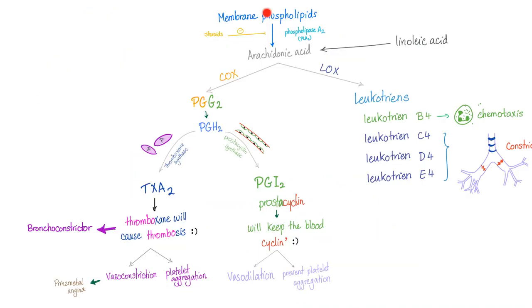Quick review of the arachidonic acid pathway. We start with membrane phospholipid. Now we have the arachidonic acid. By the cyclooxygenase, we have the prostaglandins. If you are in the platelets, that's thromboxane A2. If you are in the endothelium, that's prostaglandin I2, also known as prostacyclin. They are opposites, but they have the same origin.